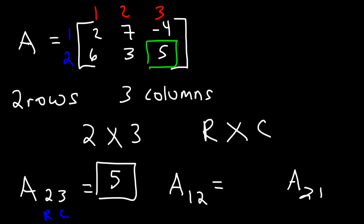What is element A₁₂ and element A₂₁? Element A₁₂ is in the first row, second column, so it has a value of 7. Element A₂₁ is in the second row, first column, and so it has a value of 6.